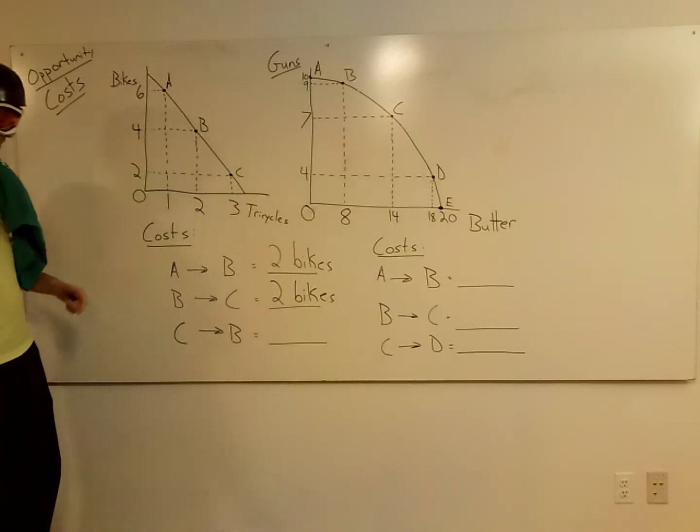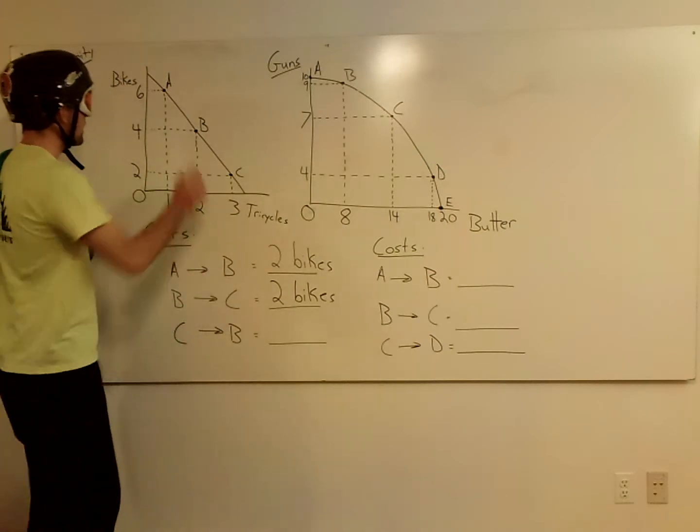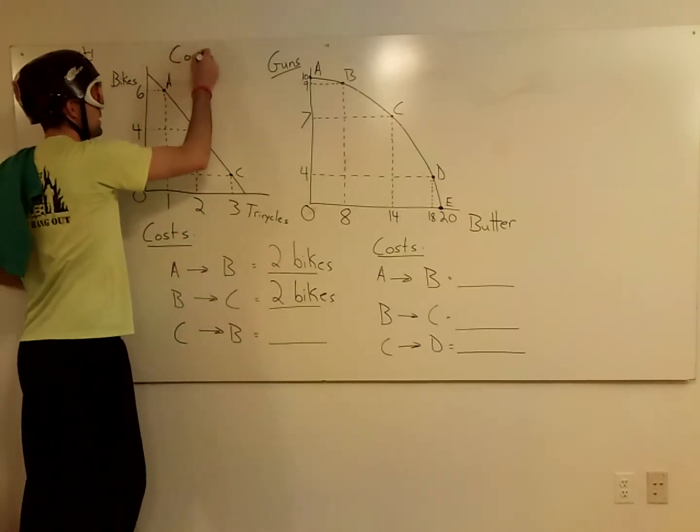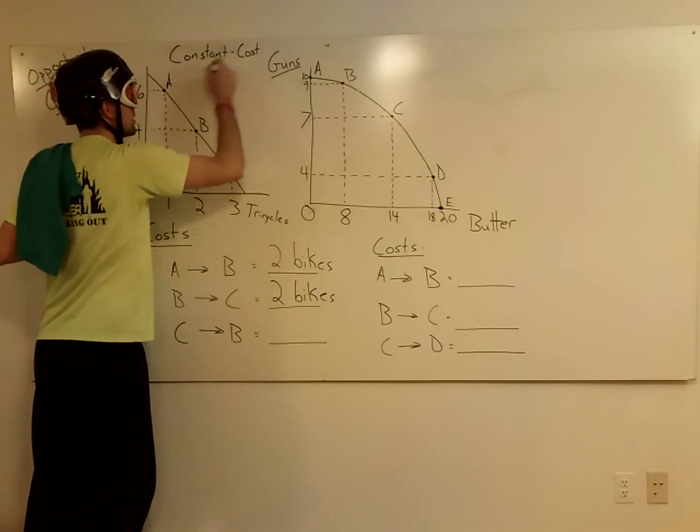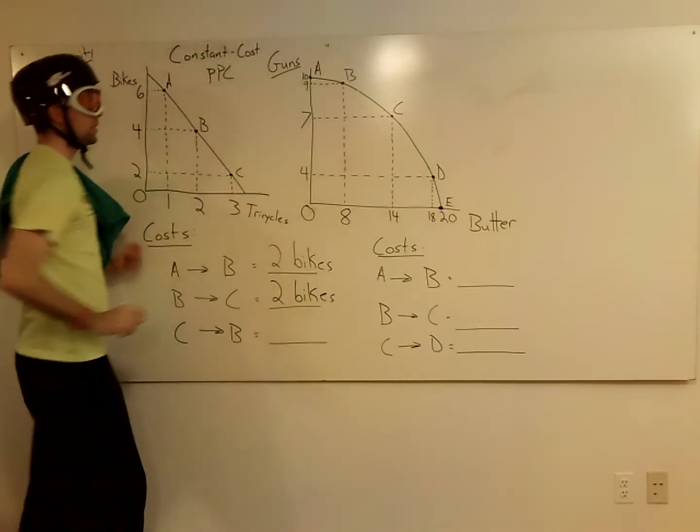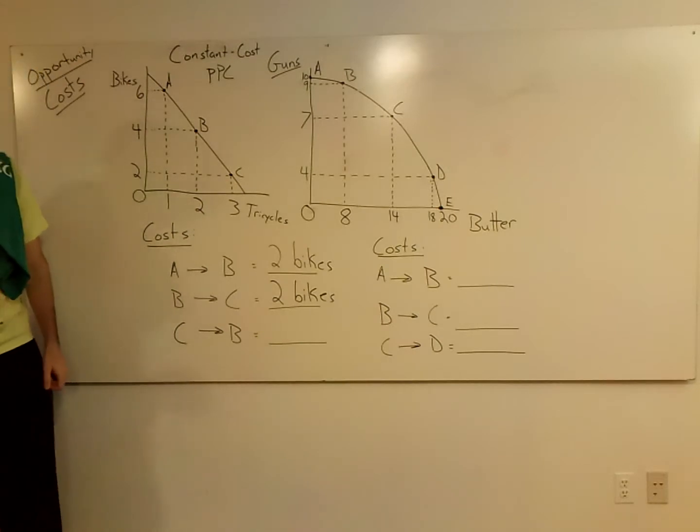You notice no matter where we went here we always gave up two bikes every time. So this is what we call a constant cost PPC curve. Could you please stop destroying the couch?